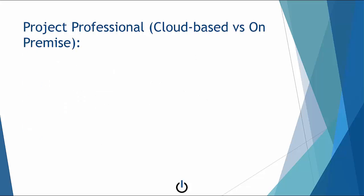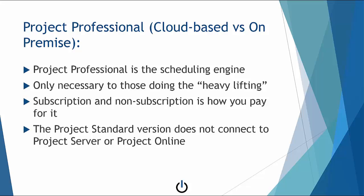Project Professional, cloud-based versus on-premise, is the scheduling engine behind Project Server and MSPO. Only those PMs who will need all of the functionality of this powerful desktop application will need Project Professional. The difference between cloud-based versus on-premise is essentially how you pay for the app. The Project Standard version has all of the same features and functionality but without the ability to connect to Project Online or Project Server.